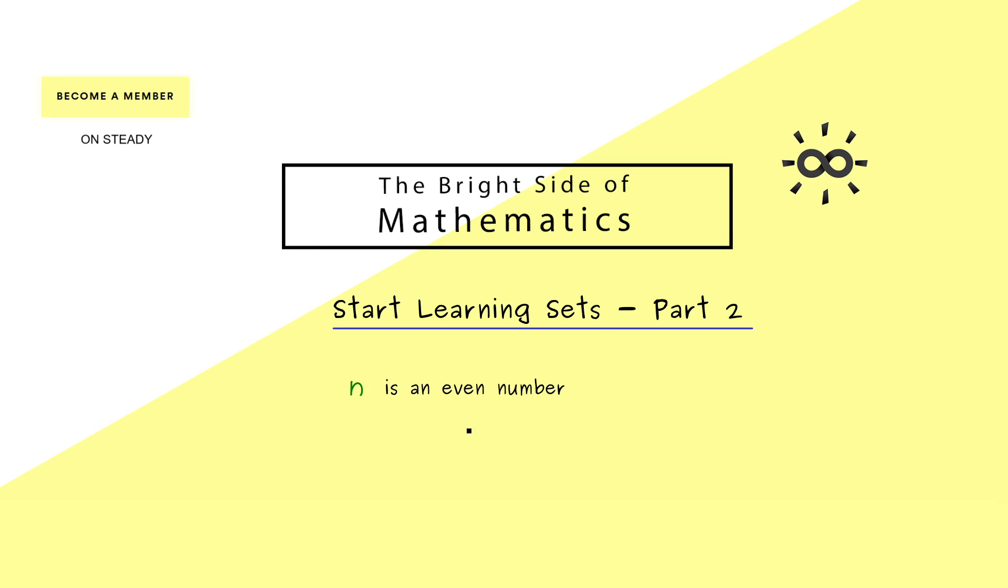A good example for this would be the sentence 'n is an even number.' Please note this is not a logical statement because this variable n is just undetermined. We have the same thing for the next sentence 'x is an animal,' and also for 'y plus 8 equals 9.'